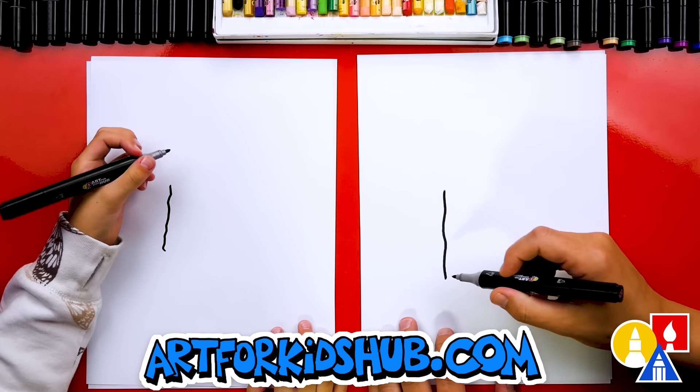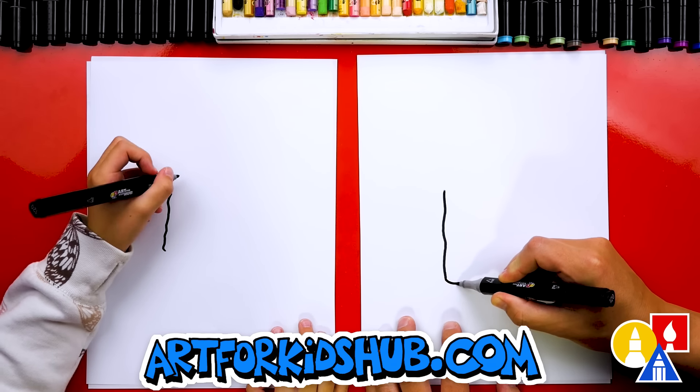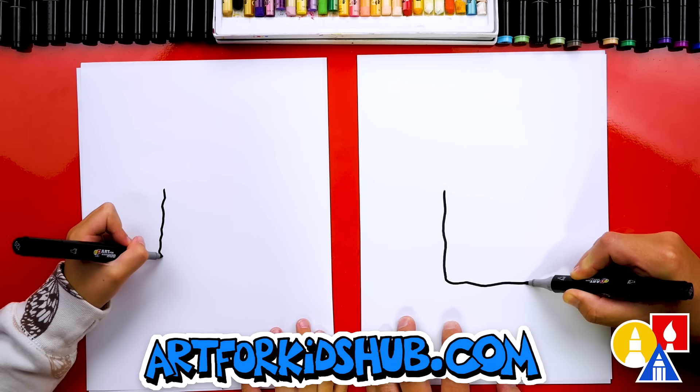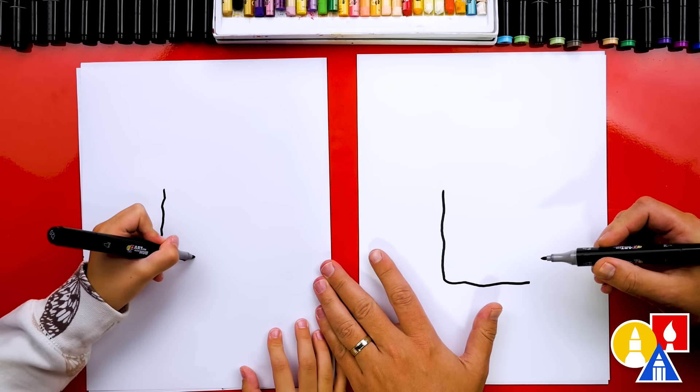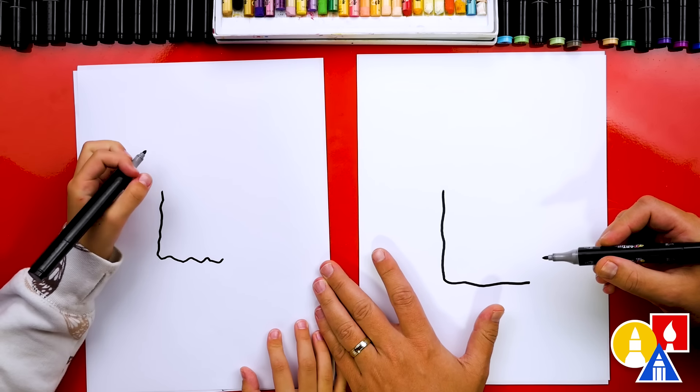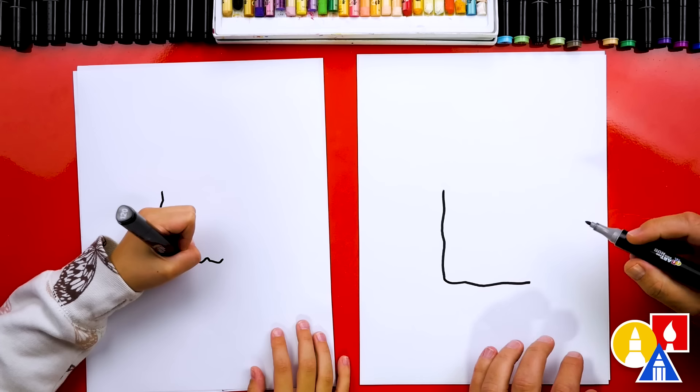Awesome. And then we're going to turn it into the letter L, and we're going to draw a wavy line down here too. Nice. I like how wiggly that line is.